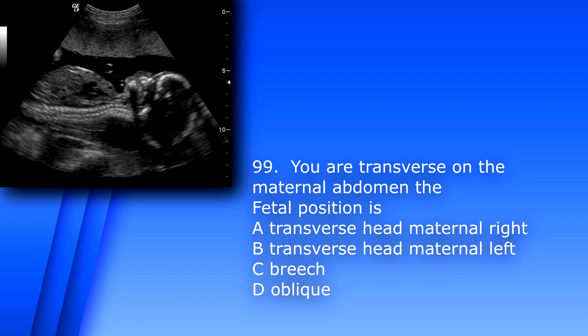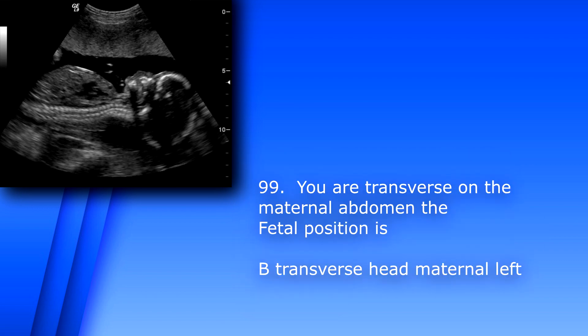Question 99. You are transverse on the maternal abdomen. The fetal position is? A. Transverse head maternal right. B. Transverse head maternal left. C. Breech. D. Oblique. When you are transverse on the uterus, the left side of the screen is the maternal's right-hand side and the right side of the screen is the maternal's left-hand side. So this baby is transverse head to the maternal left.